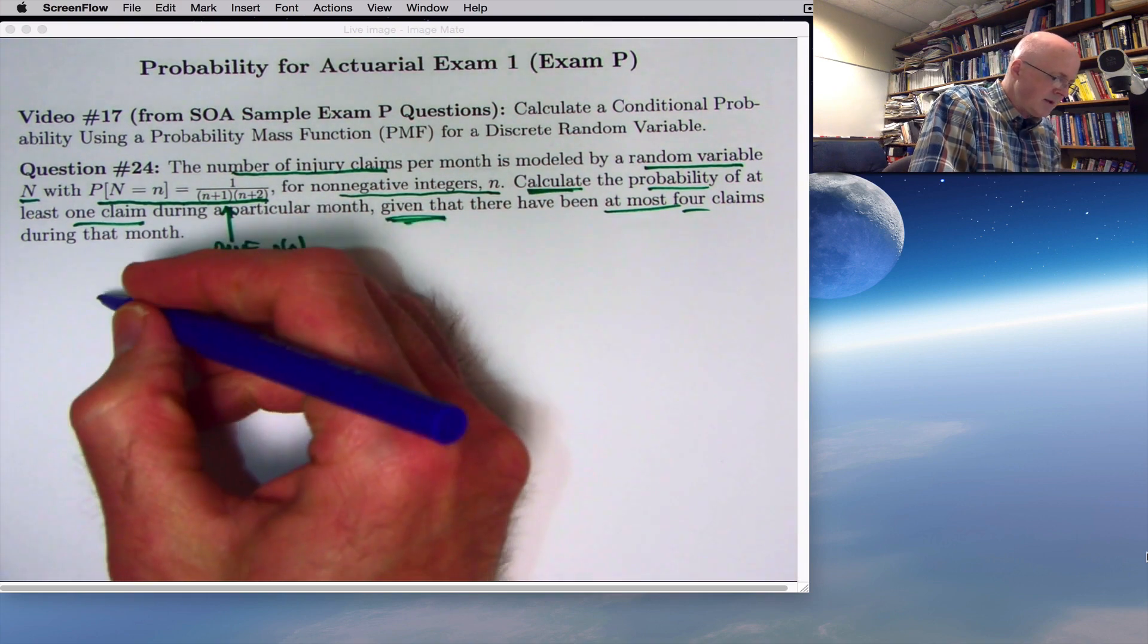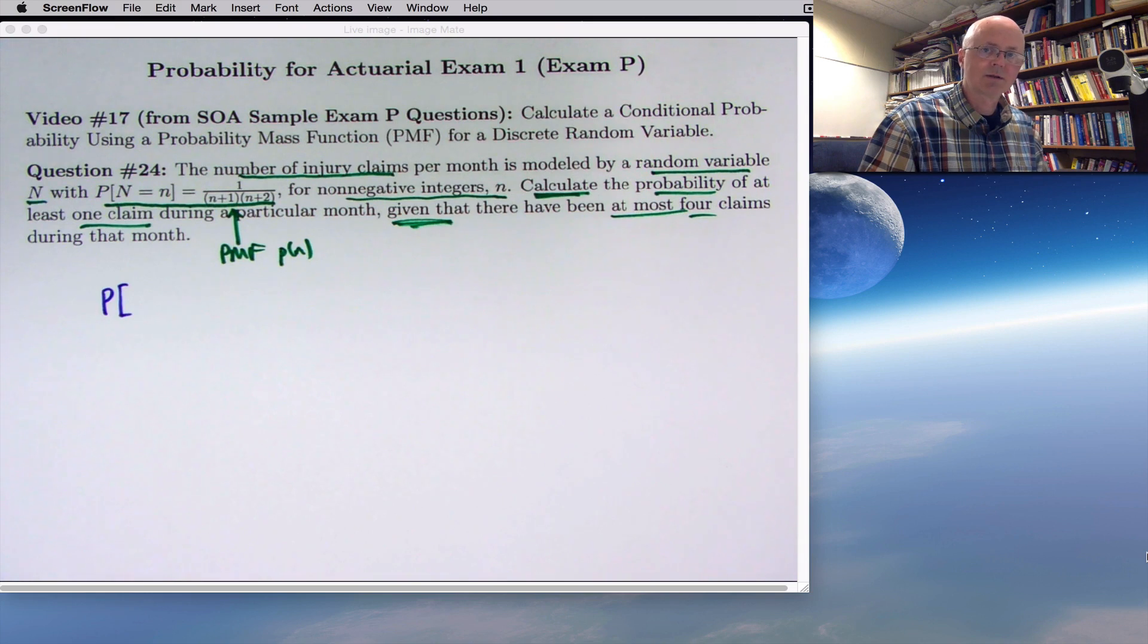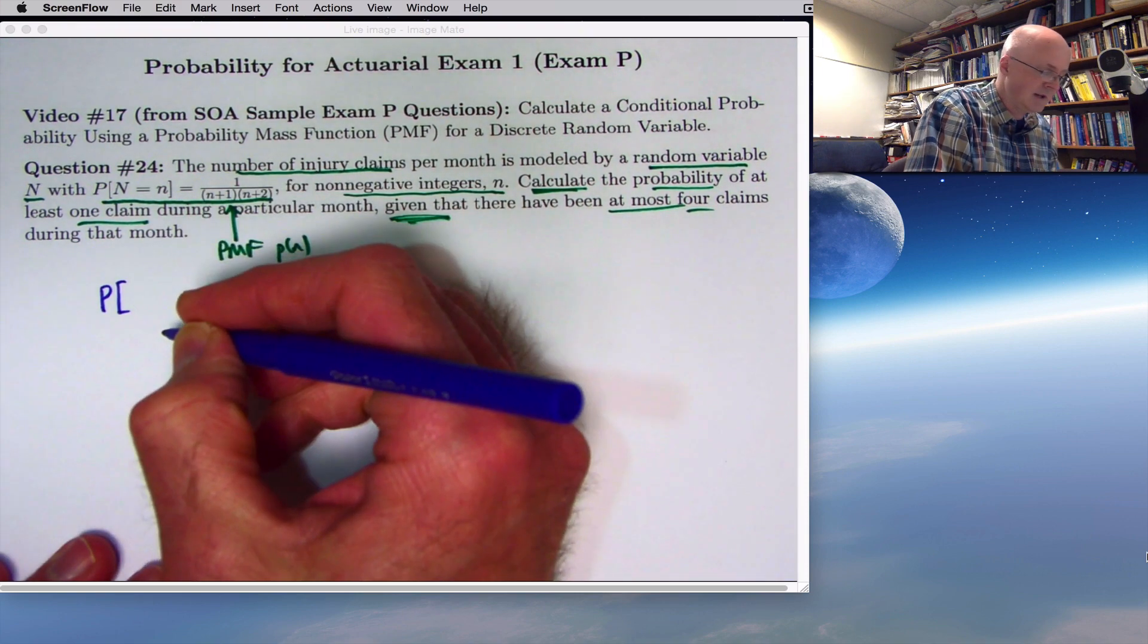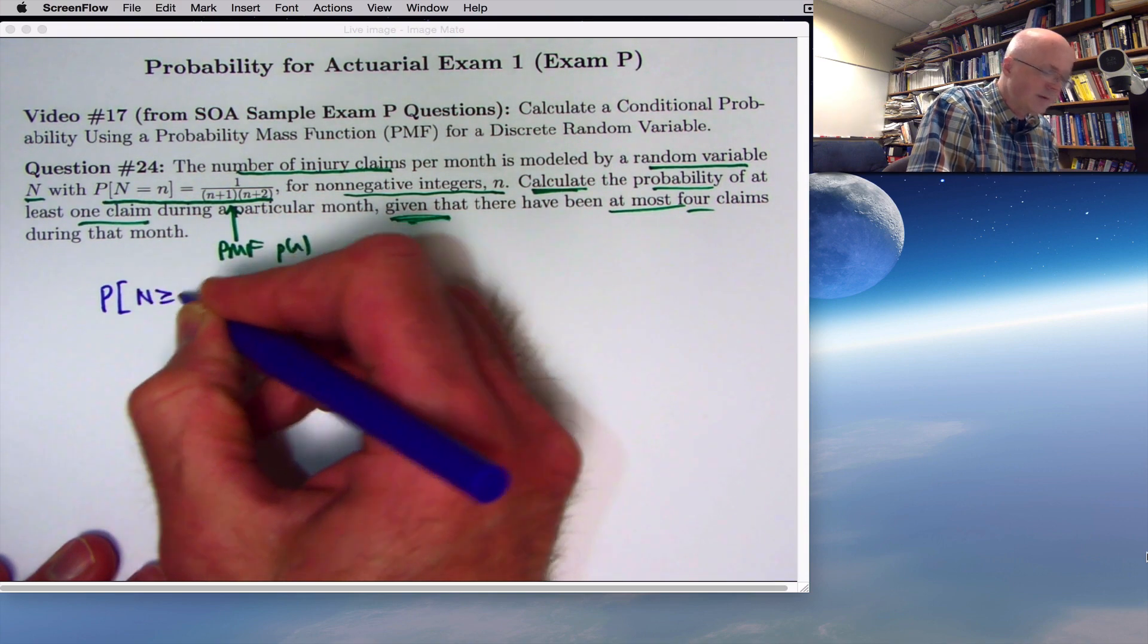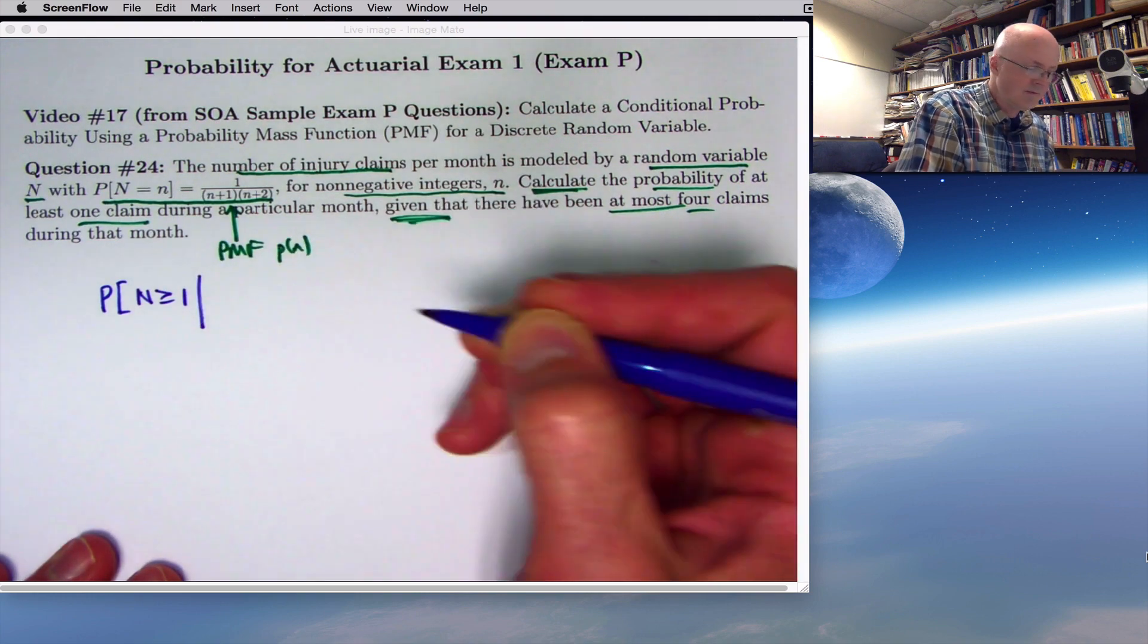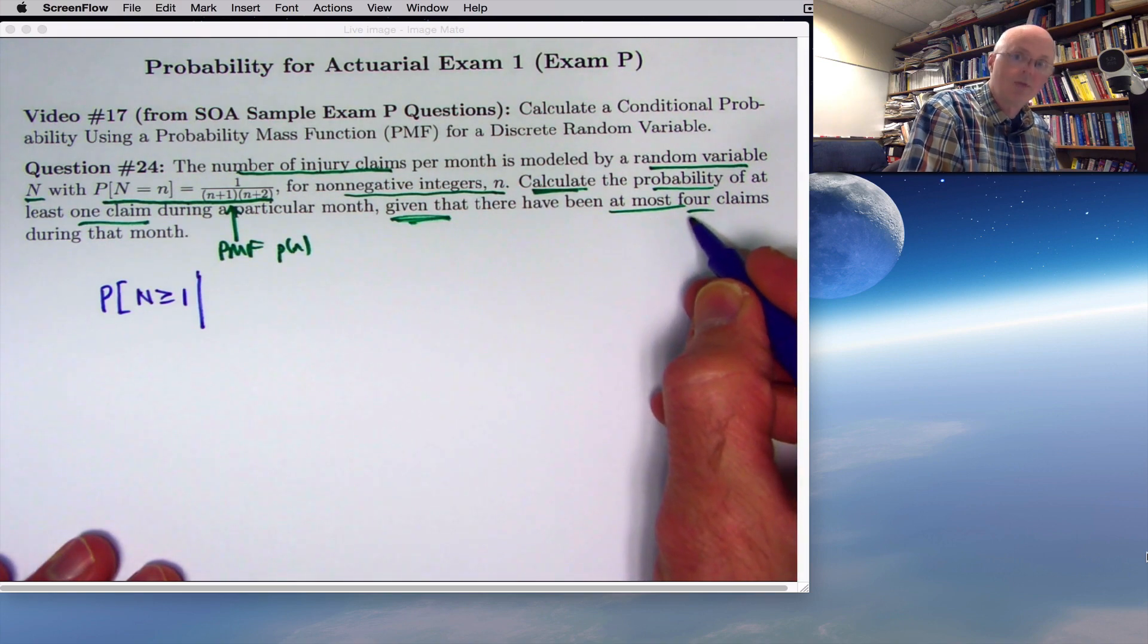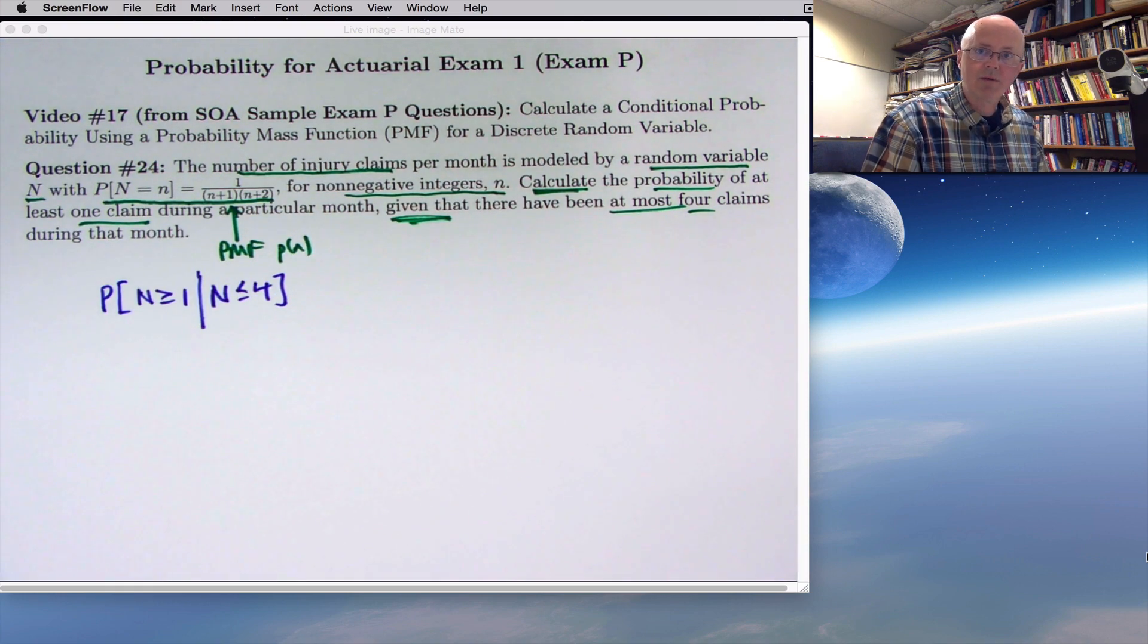So let's use probability notation to write this conditional probability. Now we're going to depart from the usual practice of using letters like A, B, C, etc. to represent subsets of the sample space. It's best to avoid thinking, typically best to avoid thinking about the sample space here. I mean, it does exist, but we can describe this more simply in terms of capital N. What is the probability of at least one claim that capital N is greater than or equal to 1, given that, I need a vertical line here, conditional probability, given that capital N is at most 4, less than or equal to 4. So, that's the conditional probability that we want to find here.